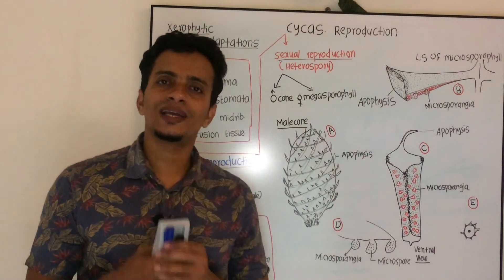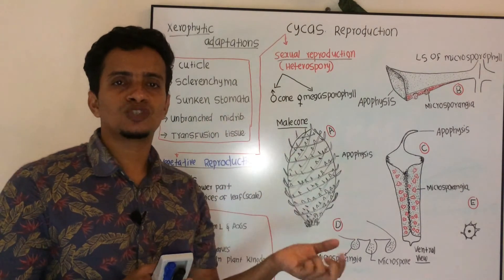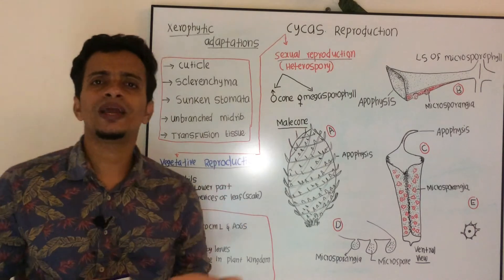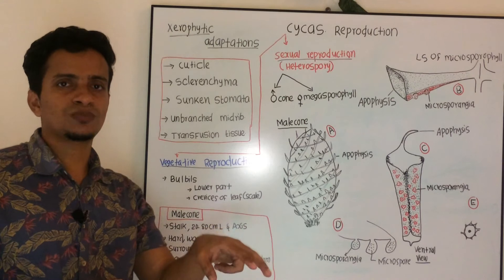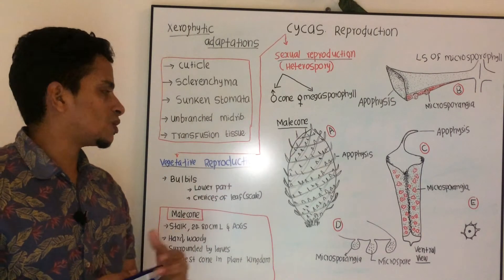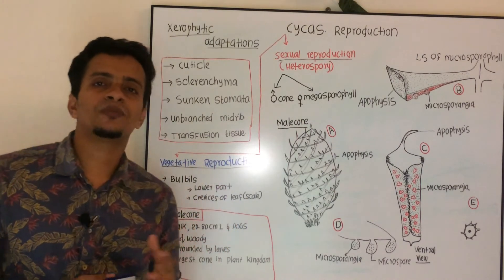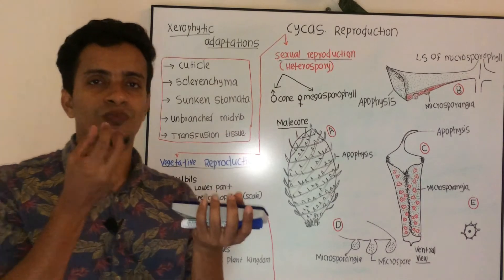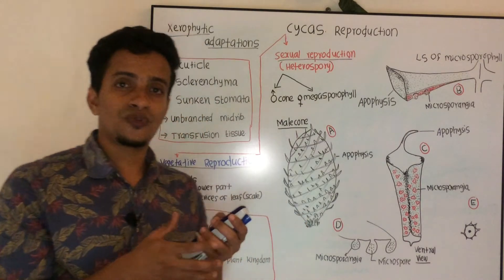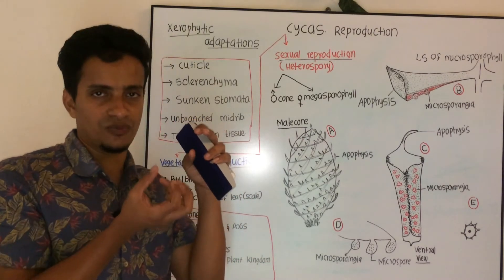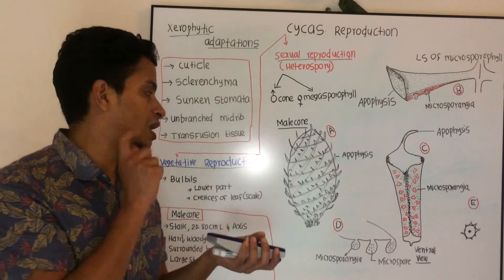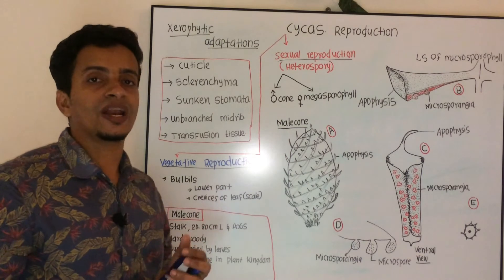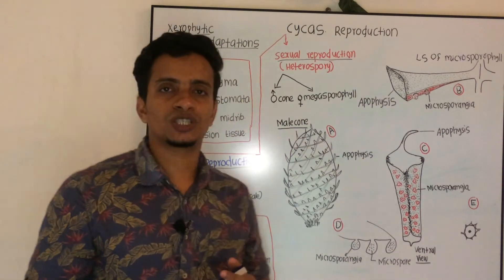Now let us move to the next section — reproduction in Cycas. Cycas reproduces by means of vegetative and sexual modes. In vegetative reproduction, from the vegetative parts of the sporophyte, if it regenerates the whole thallus, that is vegetative reproduction. The mode of vegetative reproduction is by means of bulbils — specialized structures which arise from the lower part of the sporophyte, from the crevices of the leaf.